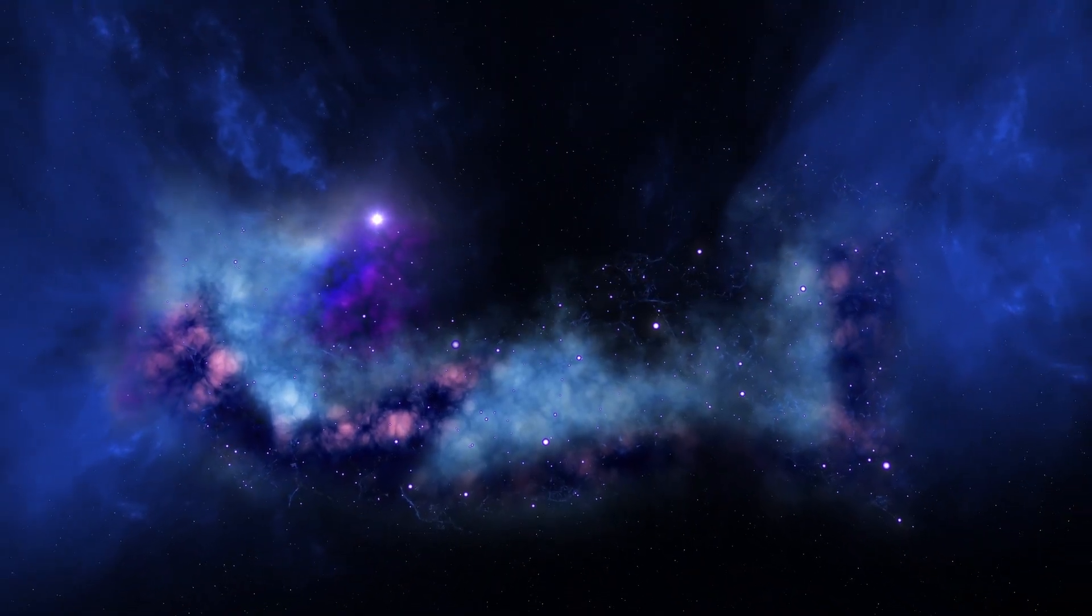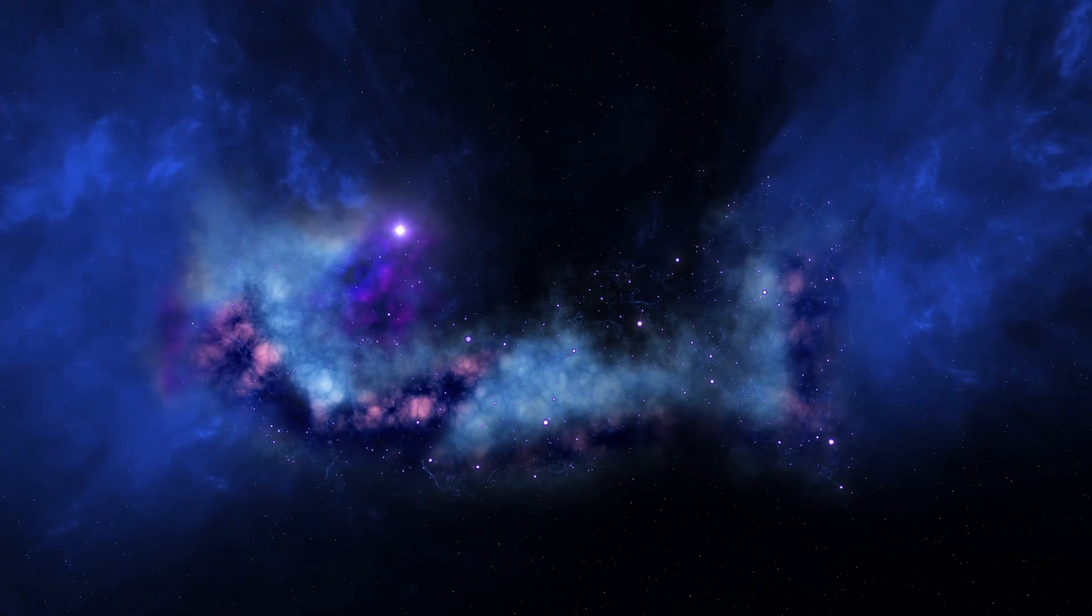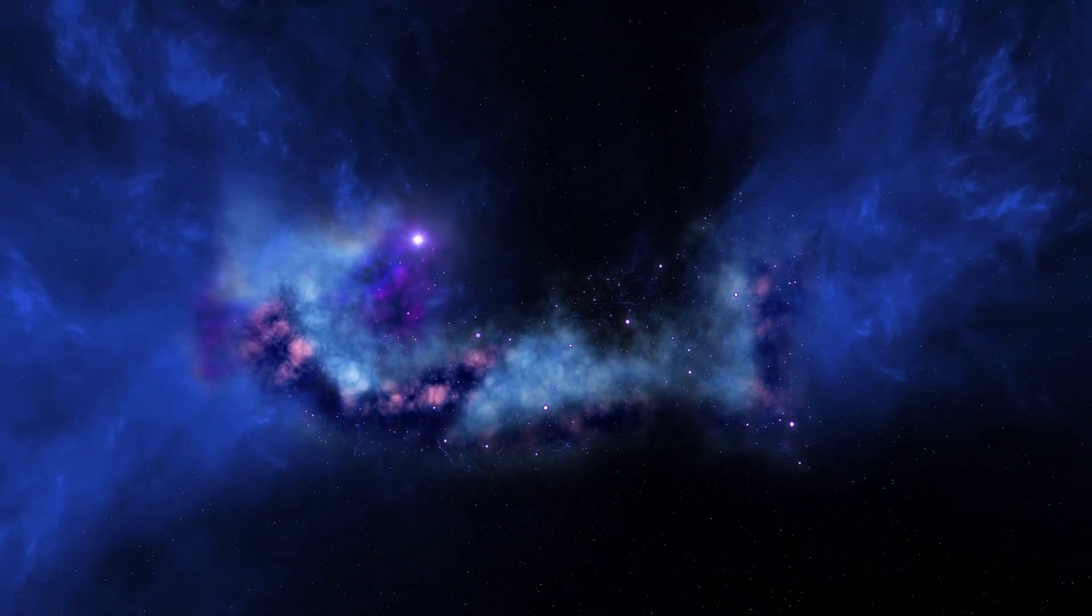There are about 100 billion neurons in the human brain, equivalent to the number of stars in our galaxy.